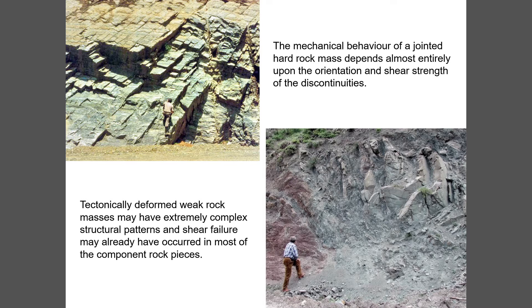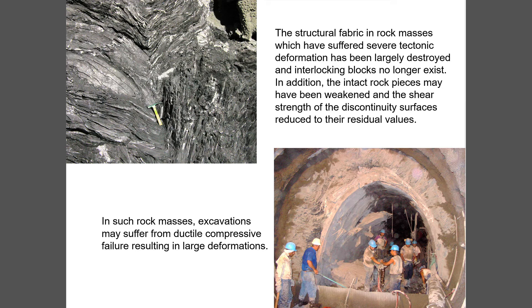In a hard rock mass, behavior is dependent almost entirely on the orientation and shear strength of the discontinuities. But in a tectonically deformed rock mass — typically those found in the Andes, Alps, or Himalayas — the structure has been almost completely destroyed by tectonic movement. Even the intact pieces of rock may have been broken or sheared, and you have an entirely different form of behavior. Here's an example from Venezuela where the tunnel face shows rock mass that has been very heavily sheared with almost no recognizable structure, and the consequence is massive deformation — squeezing — in the tunnel.